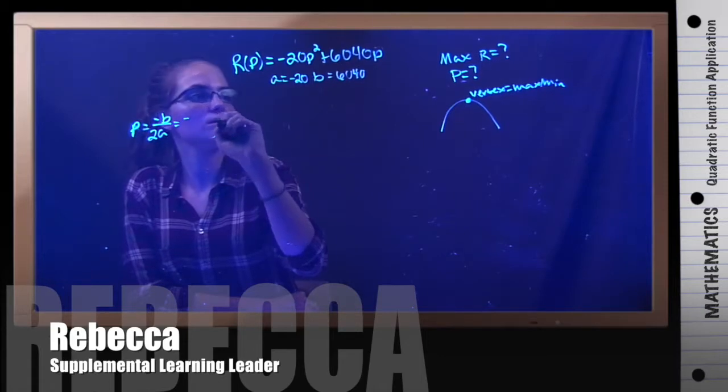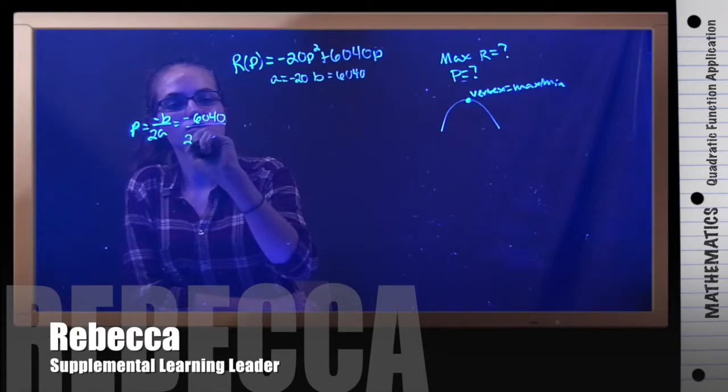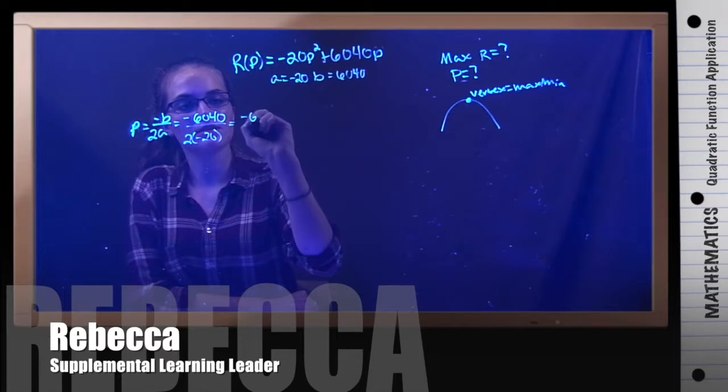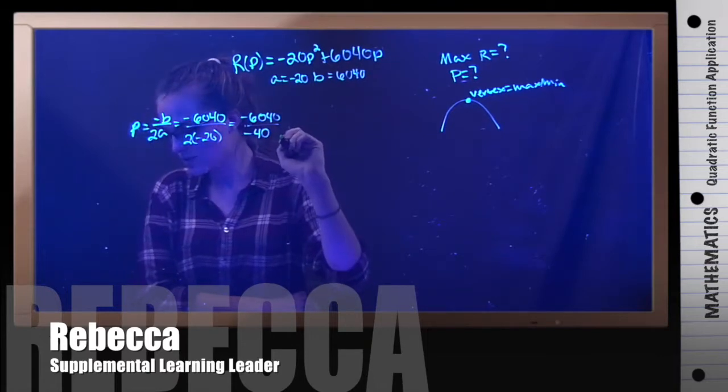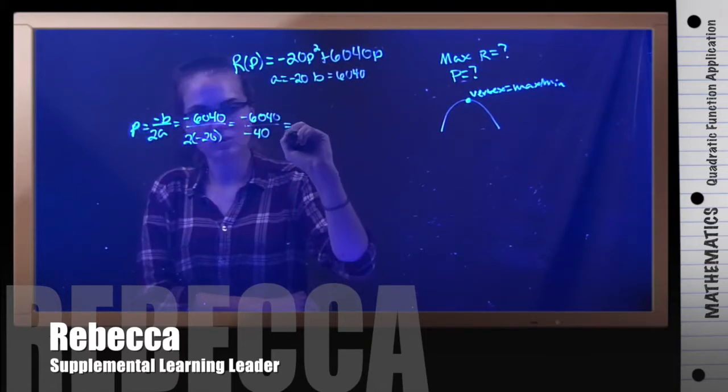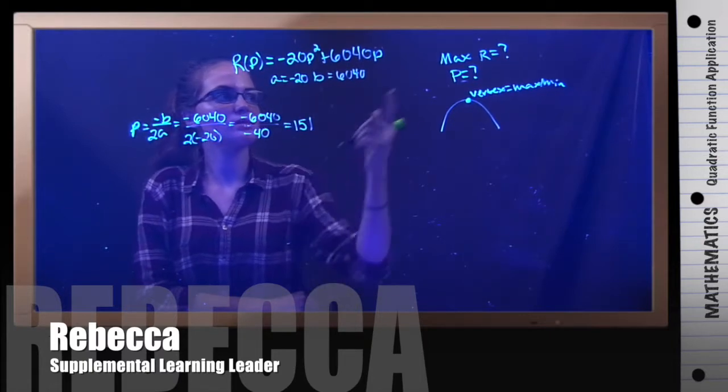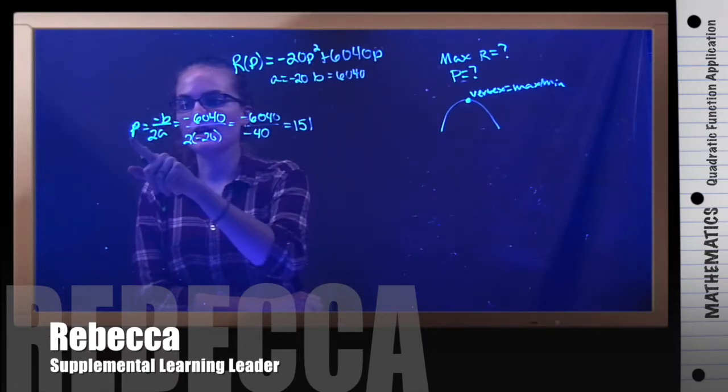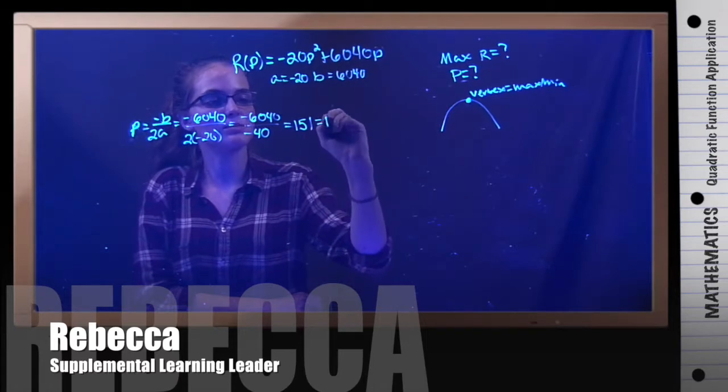So negative b is negative 6040 over 2 times a is negative 20. Now if we simplify this, negative 6040 over negative 40 simplifies to 151. Now we have to interpret this. Is this the maximum revenue or is this the price? It says p here, so this is actually the price for our maximum revenue.